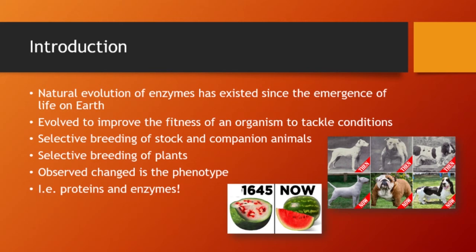Let's give you some introduction on directed evolutions. Natural evolution of enzymes has existed since the emergence of life on Earth. We are who we are because some of our proteins changed over a very long time. A lot of the evolved evolutions improve the fitness of an organism to tackle different challenging conditions — these are Darwin's natural selection rules. And what we have been practicing for hundreds of years is selective breeding of stock and companion animals.